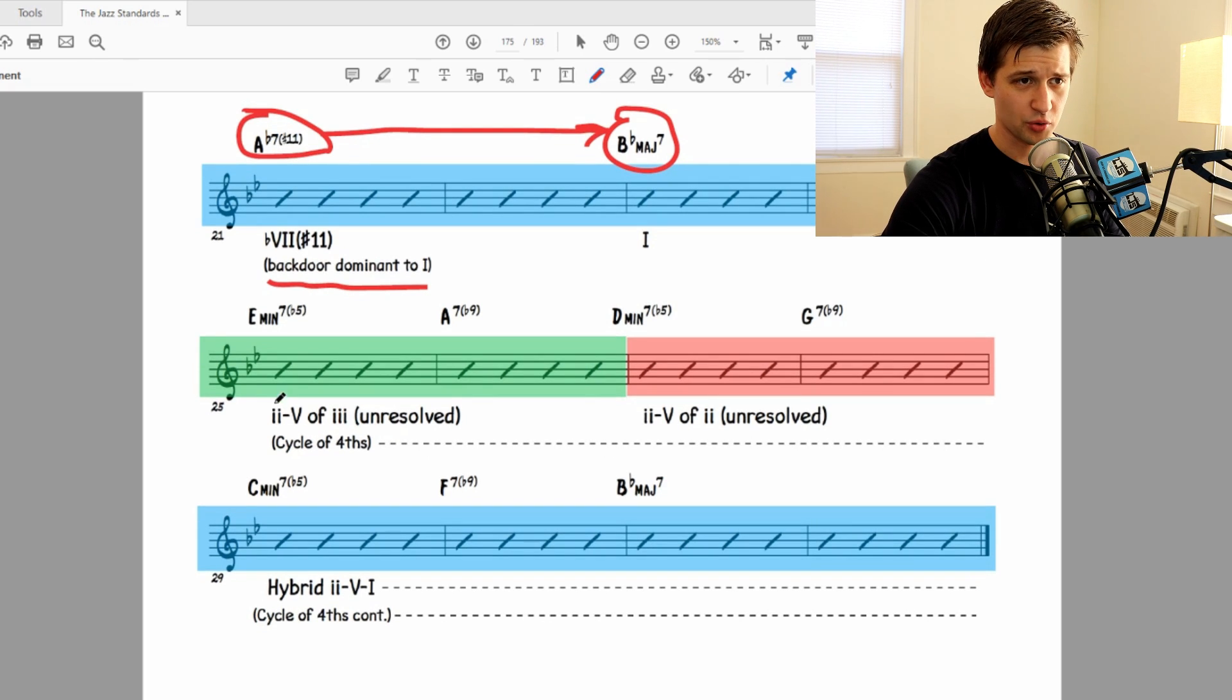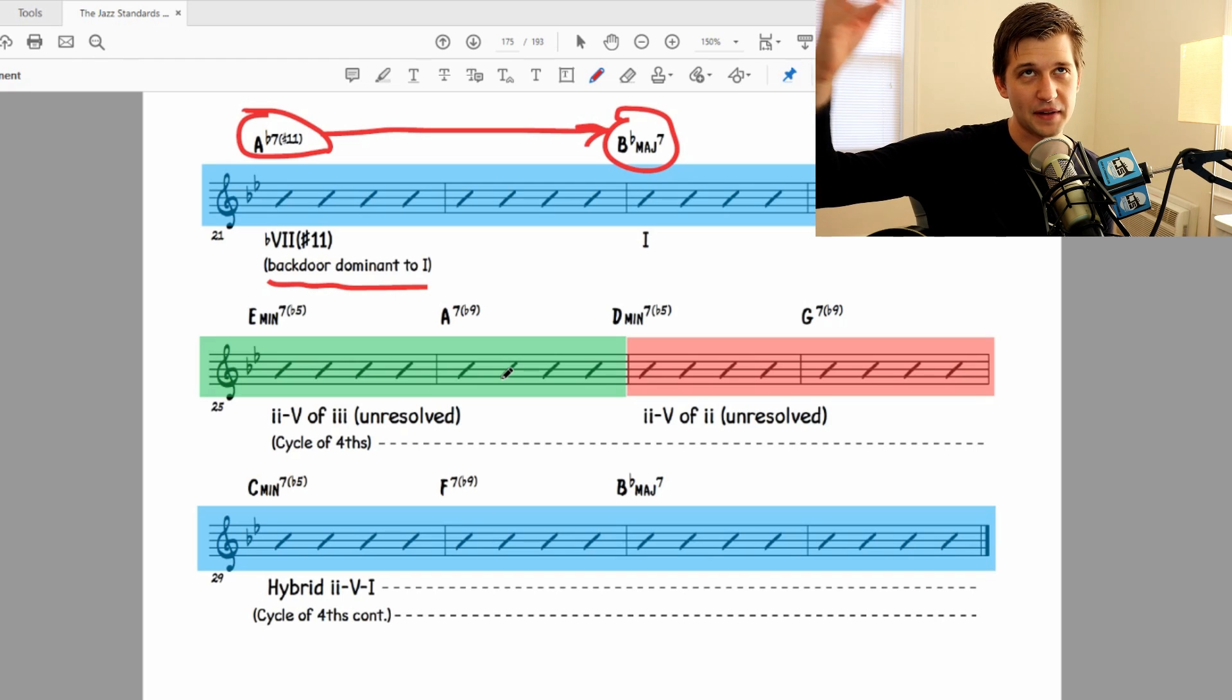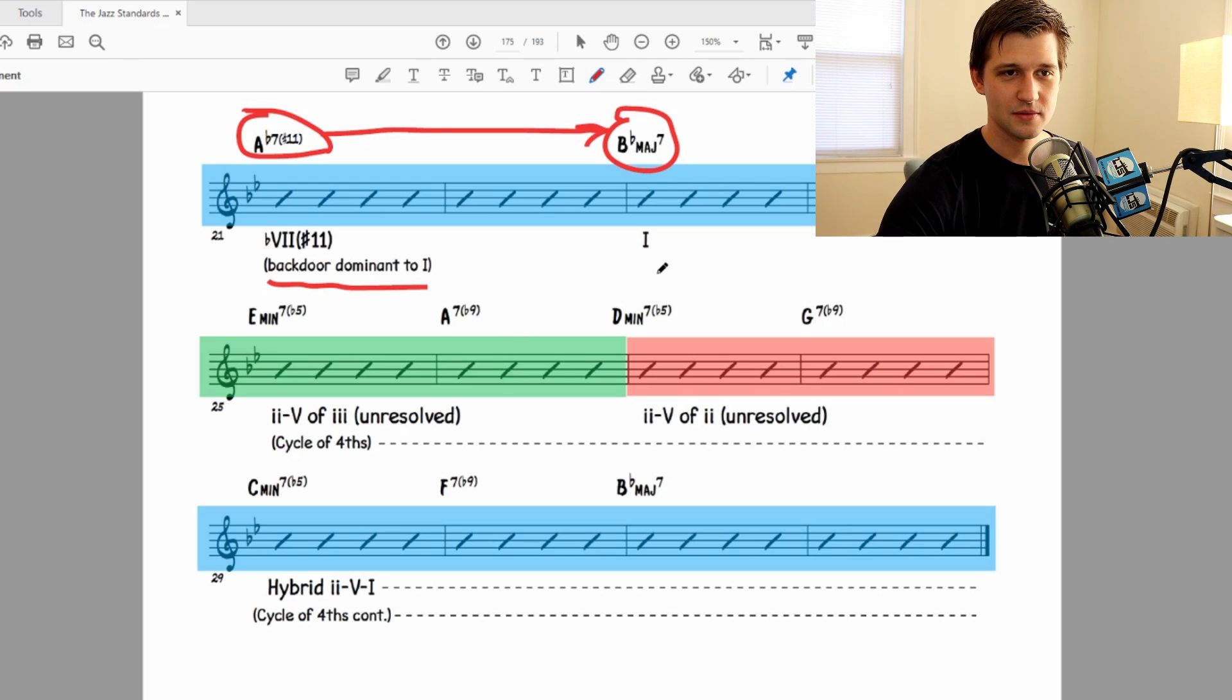So A flat 7 sharp 11 is really a backdoor dominant, replacing the 5 chord to lead us to B flat major 7. So we have a C minor 7 to A flat 7. So C minor 7 is just the 2 chord of B flat major, to A flat 7 sharp 11, to B flat major 7. Very interesting. Okay, now moving on, we have green again. So D minor, basically starting as if we're starting at the top of the form again with the melody. So E minor 7 flat 5, A7 flat 9. So it's a 2-5 of 3, but it's unresolved. And then D minor 7 flat 5, G7 flat 9. Red is the key of concert C minor, that makes sense. So we would think we would land on the C minor, but we don't. We land on a C minor 7 flat 5, which indicates it's a 2 chord of something to the F7 flat 9, B flat major. So this D minor 7 to G7 right here, that's a 2-5 of 2 unresolved, 2 chord being C minor 7.